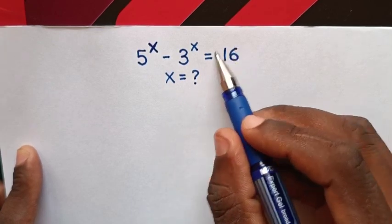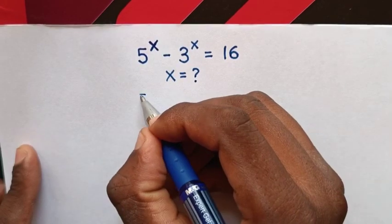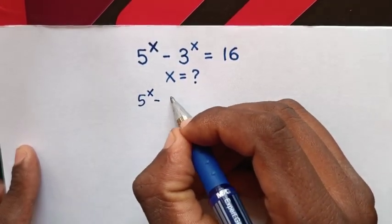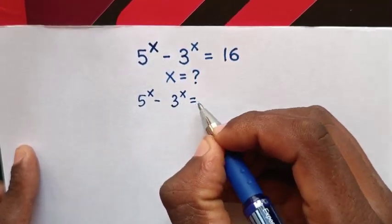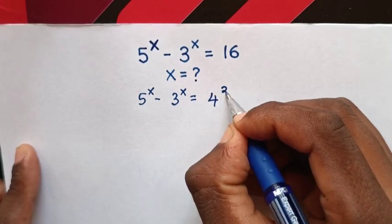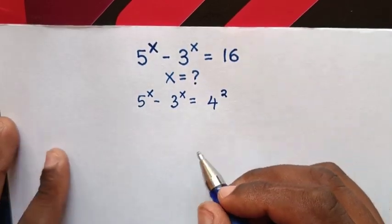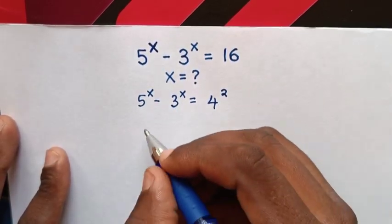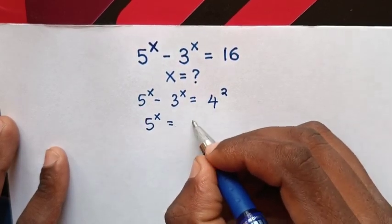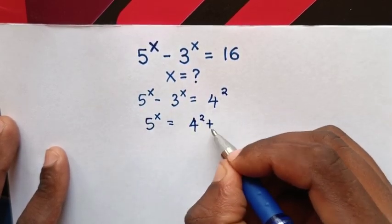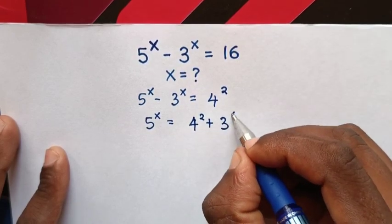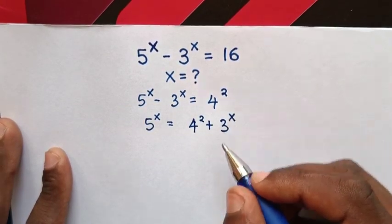First, this 16 is the same as 4 squared, so it will be 5^x - 3^x = 4^2. Then next step, we take this to the right side, so it will be 5^x = 4^2 + 3^x.